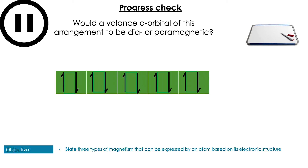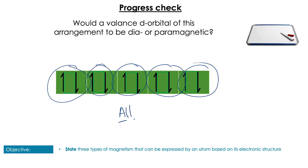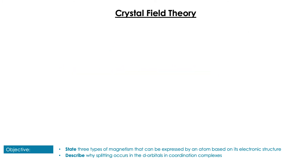One last question on magnetism — would we expect this valence d orbital to be diamagnetic or paramagnetic? Here we had a full d shell, so five pairs of electrons. If we have all paired valence electrons it's going to be diamagnetic. Remember, we're never going to be able to tell just from the electron configuration if something is ferromagnetic — for that we have to know if it is nickel, cobalt, or iron.